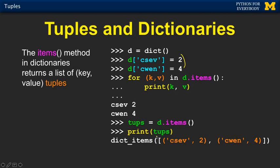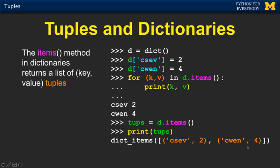And so if we say d.items(), we say give me the tuples — and so the tuples come back. So this is a list of tuples. What happens is that is how the two-variable for loop works — this is a list of two-tuples.